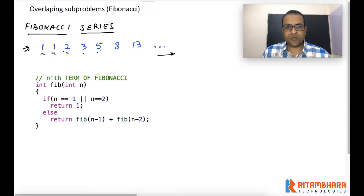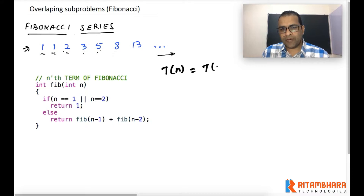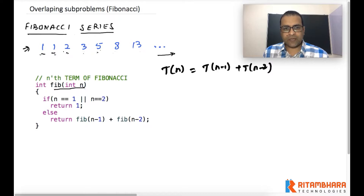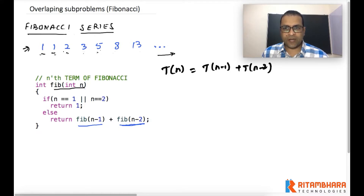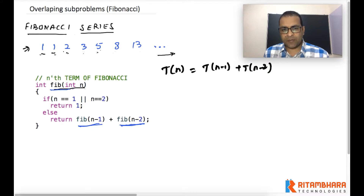If we write it in terms of a function, the nth term of Fibonacci equals the (n-1)th term plus the (n-2)th term. The conversion of this into a recursive function is straightforward: to compute the nth term we call the function for (n-1) and (n-2), with a terminating condition that if n equals 1 or n equals 2, we return 1 as a hard-coded value.